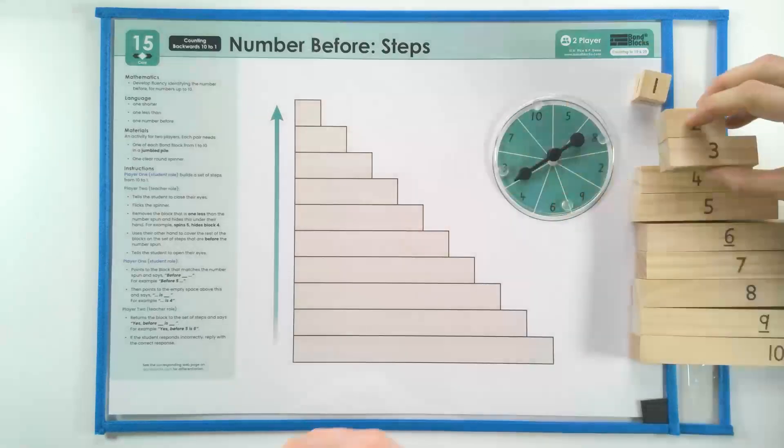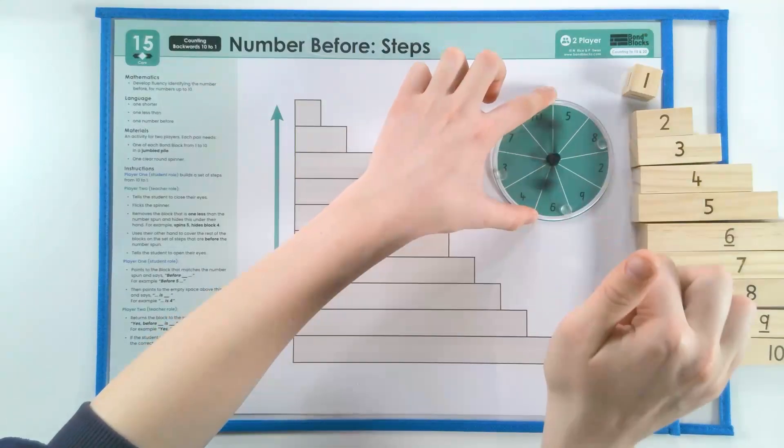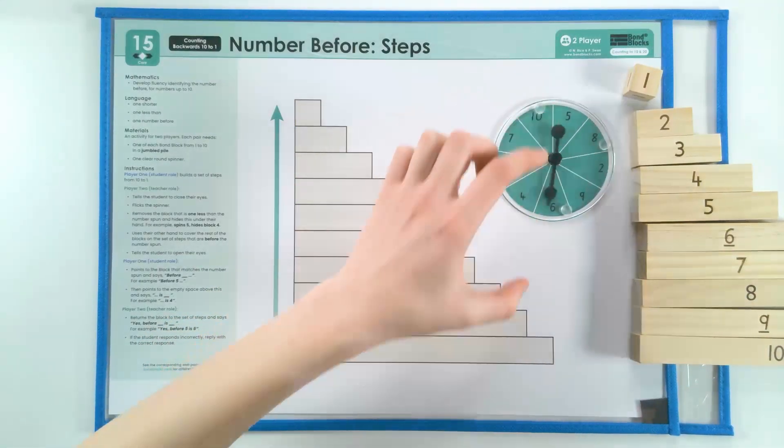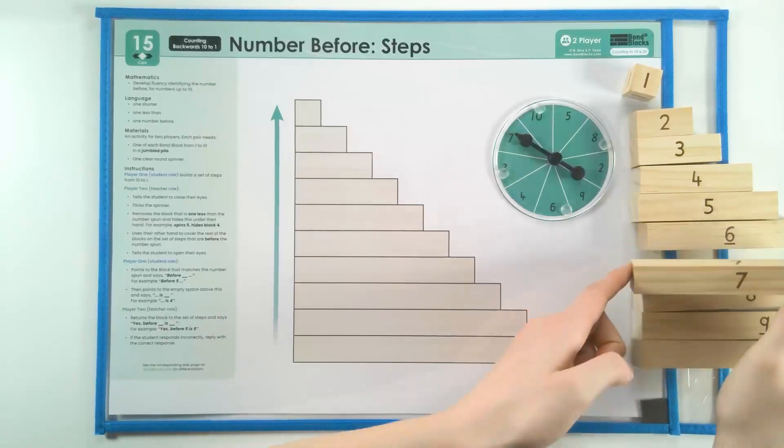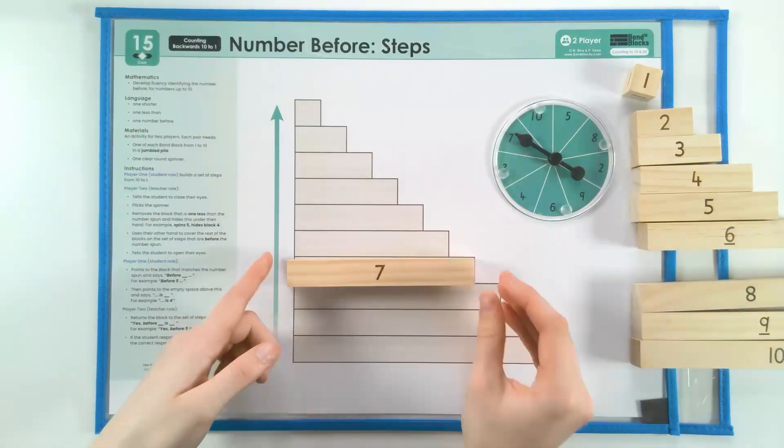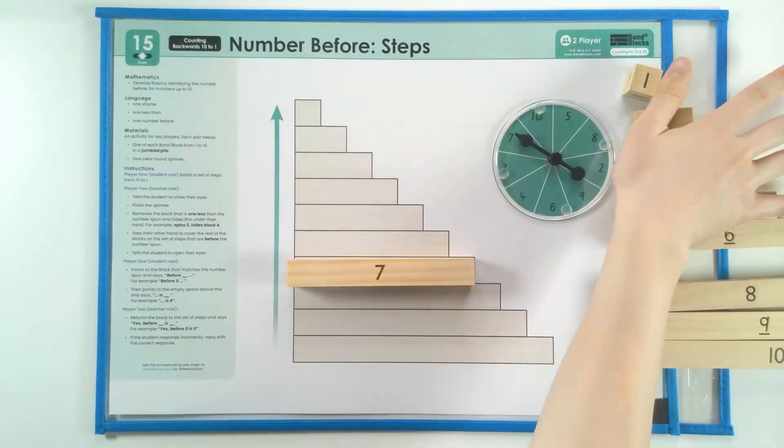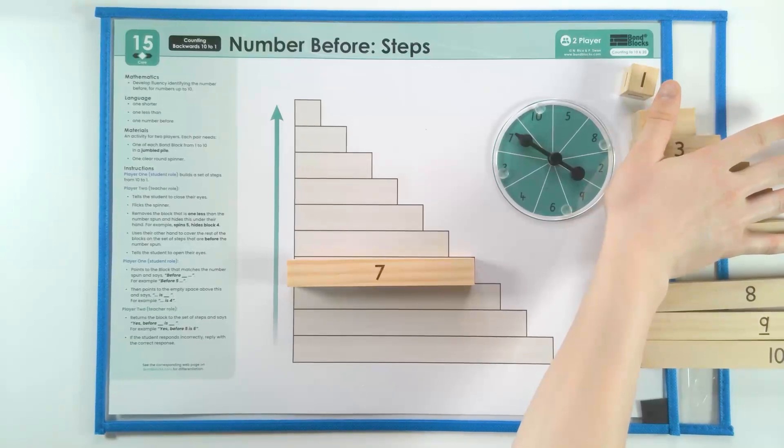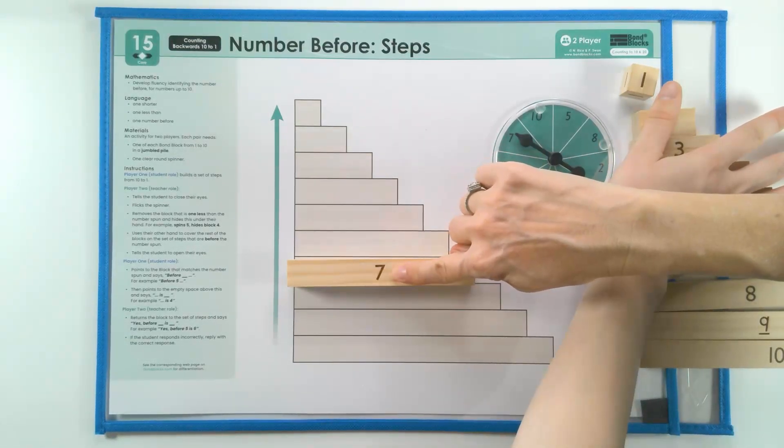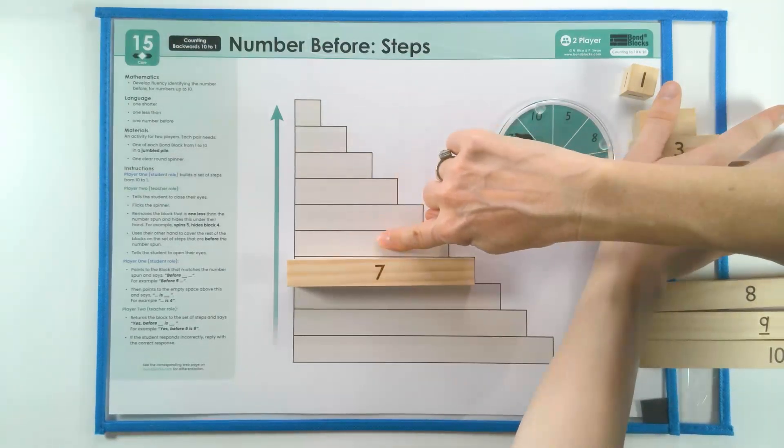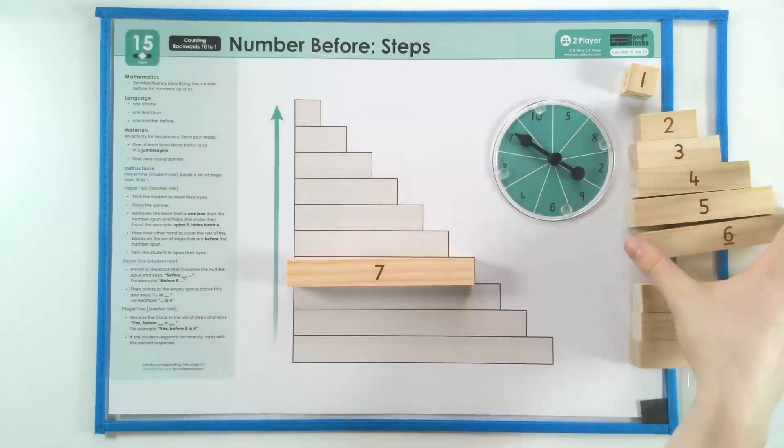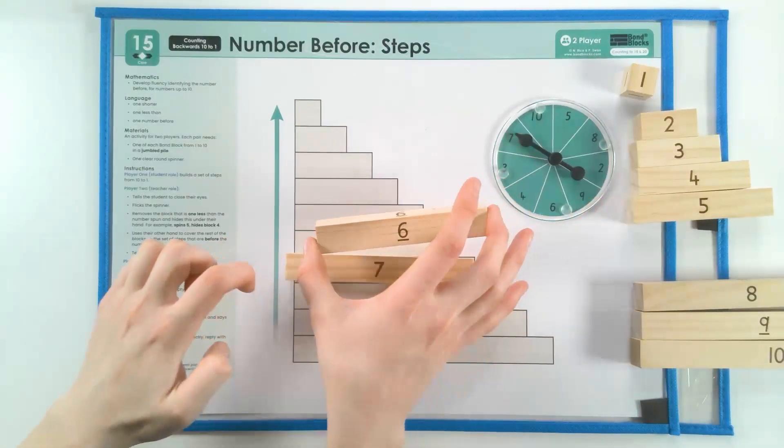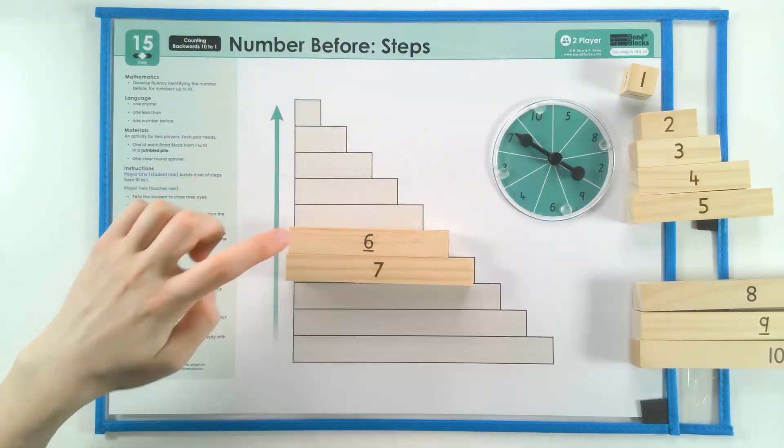Now I'll close my eyes. I'm going to cover up the answer. Before seven is six. I'll check you. Yes, before seven is six. Great.